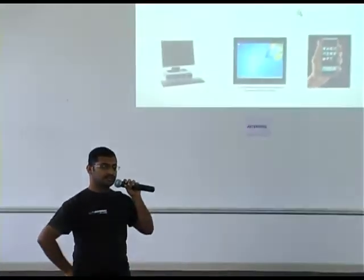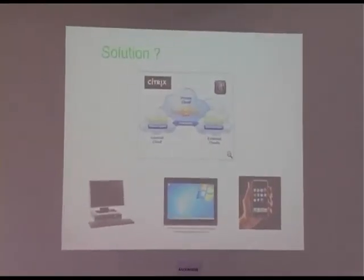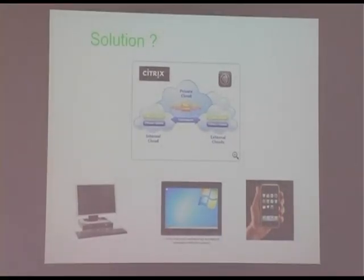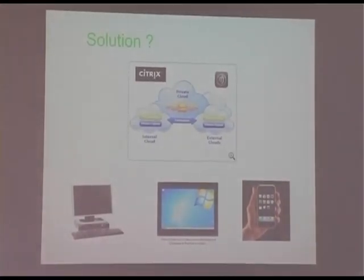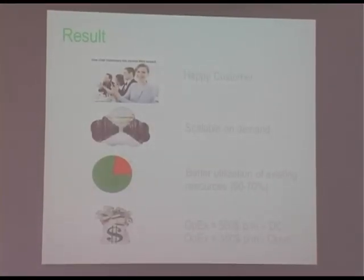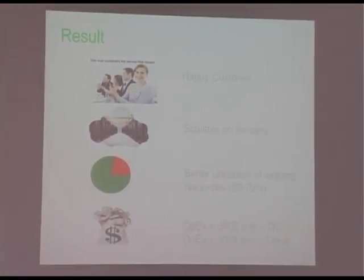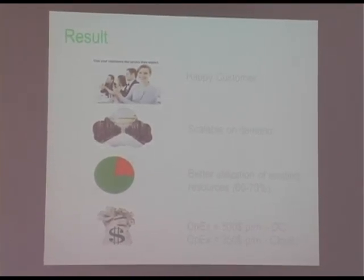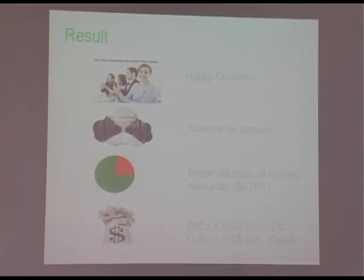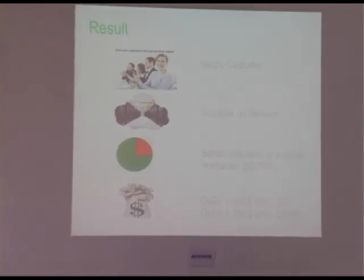The solution provided was to build servers with a private cloud and Citrix technology on top. Users were able to access everything and could scale up using the same resources they already had. As a result, the customer was very happy. They could scale their servers on demand — during Thanksgiving, Christmas, or other festival times — and were able to completely utilize their infrastructure up to 60-70% as a benchmark. They also saved money: typically managing a server and data center costs $500 per month on average, but with Amazon Cloud, you pay $350. So there was cost reduction and time savings.